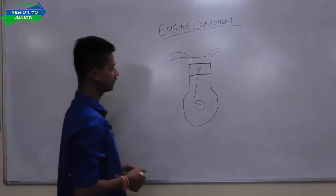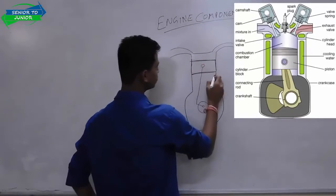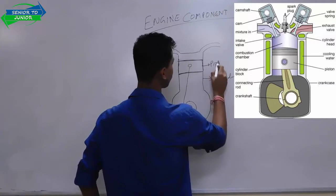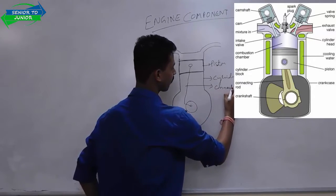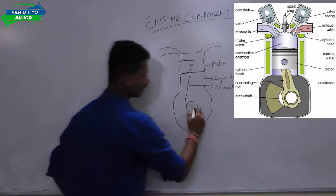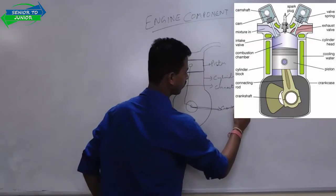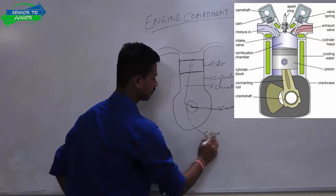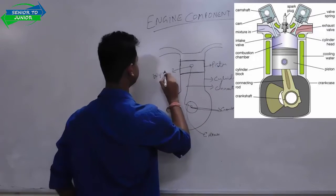I have drawn an engine component here. Let me first nomenclature all the parts. This is your cylinder, this is your piston, this is your connecting rod, this part is your crankshaft, this is your crank, this is your connecting rod, and this is your gudgeon pin.